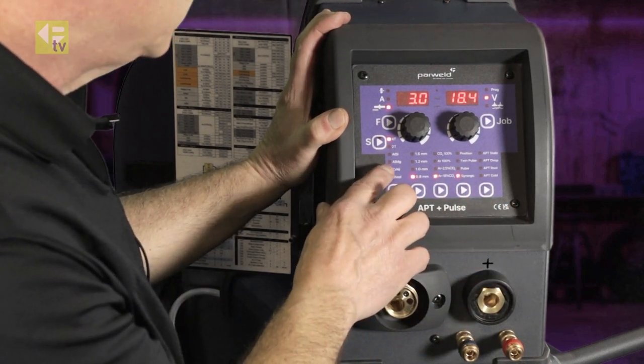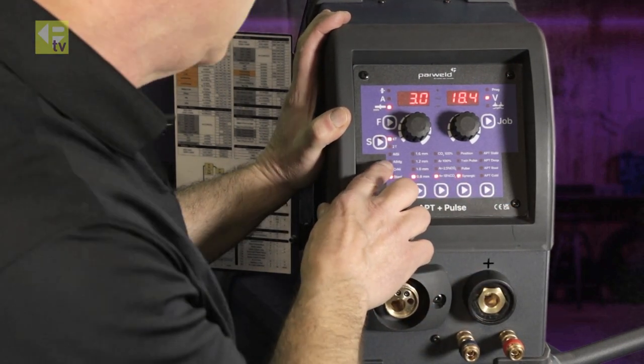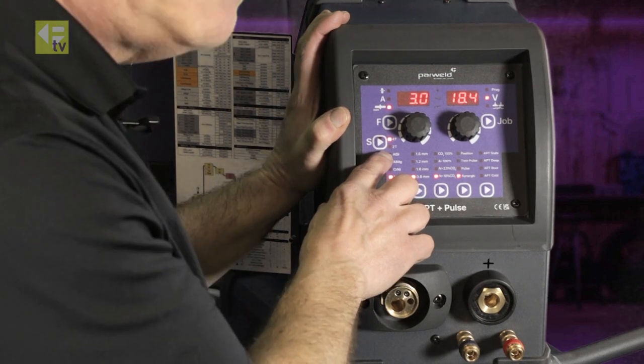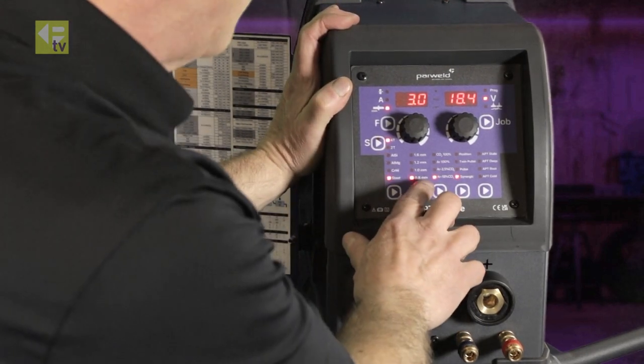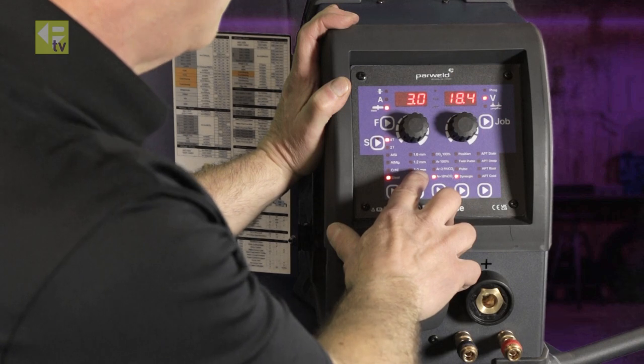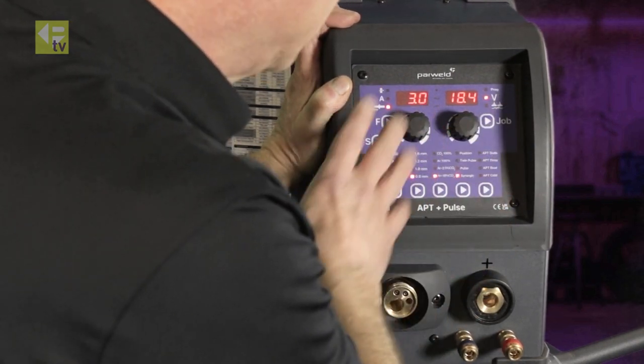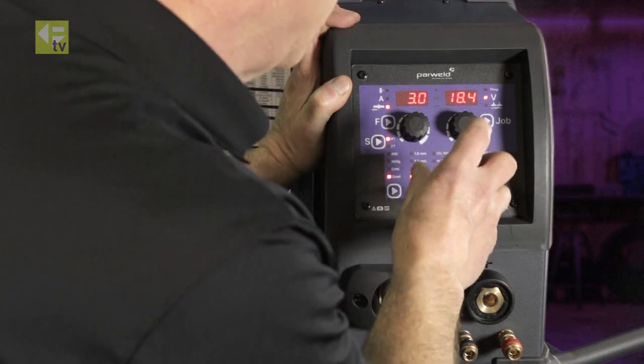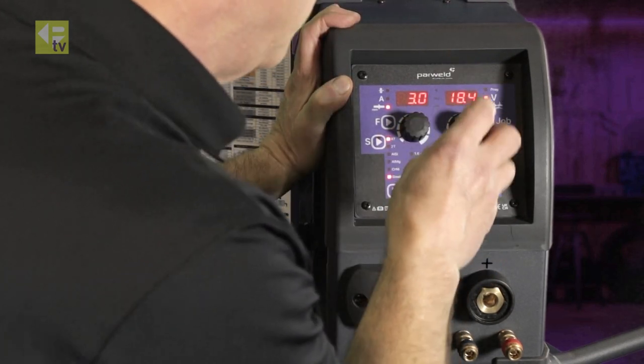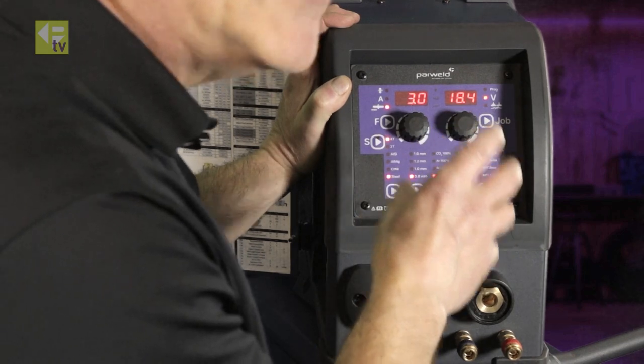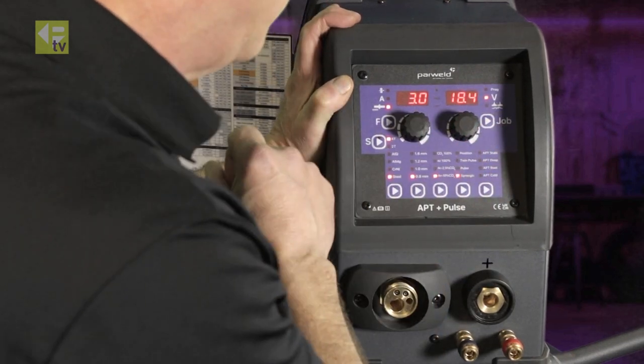So we've got steel, stainless steel, aluminum, and aluminum silica. We have a range of wires from 0.8, 1mm, 1.2 to 1.6. A range of gases to suit those materials, and also we've got pulse and twin pulse and synergic selection on there as well.